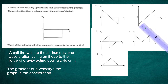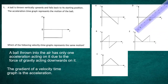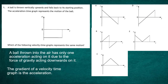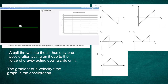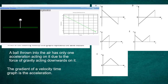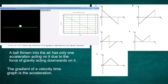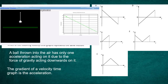Graph D could have been a contender, but the giveaway is that its gradient is positive. The acceleration-time graph clearly shows a negative acceleration, so Graph D's positive gradient rules it out. The answer to question one is Graph A — the classic 'ball thrown into the air' graph. A simulation running in the background confirms that a ball thrown into the air produces a velocity-time graph exactly matching Graph A.